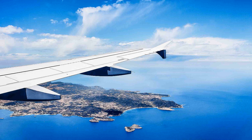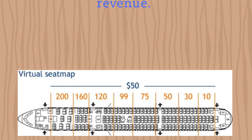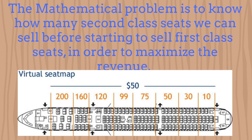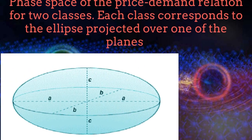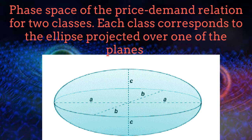The mathematical problem in revenue management for airlines, in the case where we have two classes, is to know when the company should stop selling second class tickets — which are the cheapest — before starting to sell the first class tickets. The price-demand variables obey the dynamics of the quantum harmonic oscillator Hamiltonian in a semi-classical treatment. The phase space — namely the plot of the demand and the price variables — would follow the contour of an ellipsoid. In this way, the problem of maximizing the revenue becomes a geometrical problem. Note that each ticket class would correspond to one dimension of the oscillator.